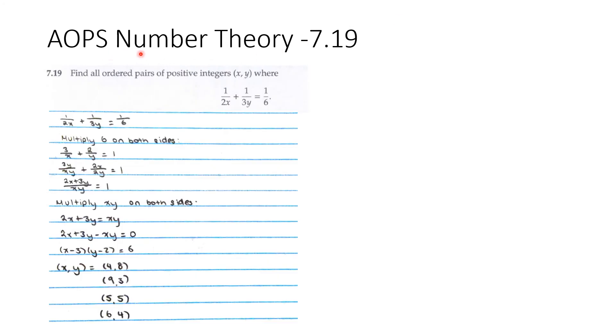Problem 7.19: Find all ordered pairs of positive integers x, y where 1/(2x) + 1/(3y) = 1/6.